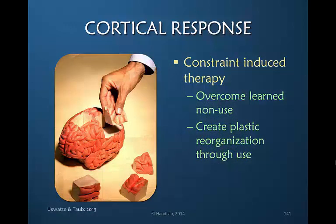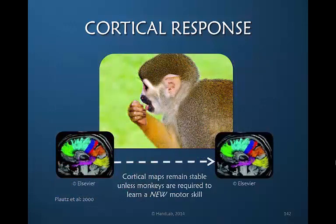Constraint-induced therapy is a treatment approach primarily for patients who have suffered a cerebrovascular accident or trauma to the brain. It is intended to overcome the learned non-use that occurs in response to areas of the brain not being functional within the motor cortex. It has been well proven that constraint-induced therapy creates a plastic reorganization of the motor cortex through use. No change will occur unless the patient is doing something new — something that requires a different motor pattern to what they are already accustomed. It is the newness of something that alters the representation.